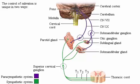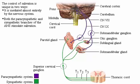The control of salivation is unique in two ways. First, it is mediated almost entirely by the nervous system — note that both gut hormones and neural reflexes regulate secretion in other portions of the GI tract. Secondly, both the parasympathetic and sympathetic branches of the autonomic nervous system stimulate salivation.